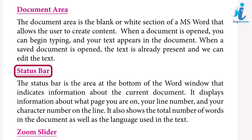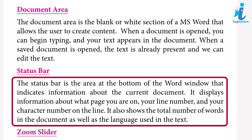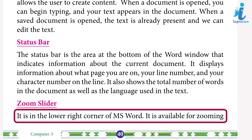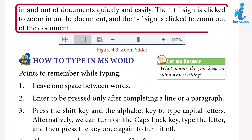The status bar is the area at the bottom of the Word window that indicates information about the current document. It displays the page number, line number, and character number, as well as the total number of words in the document and the language used. The zoom slider is in the lower right corner of MS Word, available for zooming in and out of documents quickly. Click the plus sign to zoom in and the minus sign to zoom out.